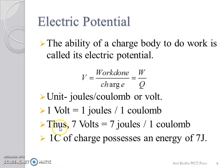Thus, when we say that a body has an electric potential of 7 Volt, it means that 7 Joules of work has been done to charge a body to 1 Coulomb. In other words, every Coulomb of charge possesses an energy of 7 Joules.